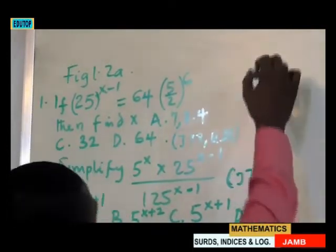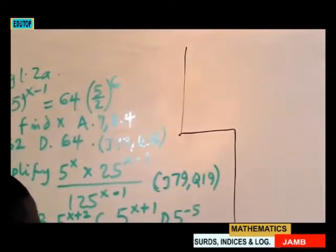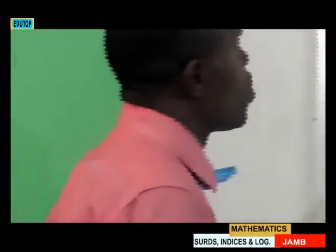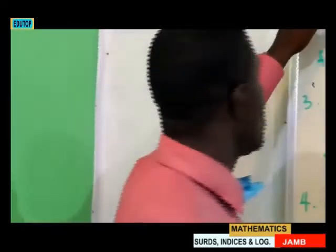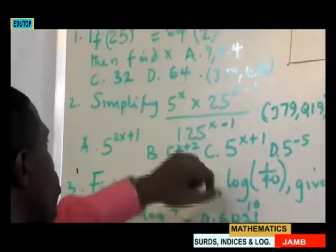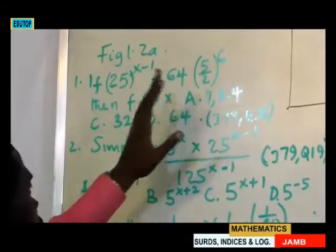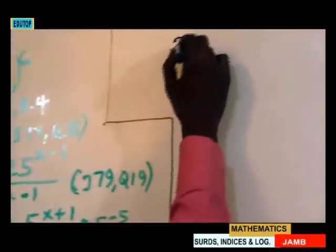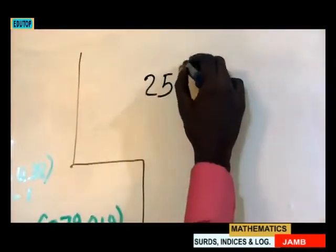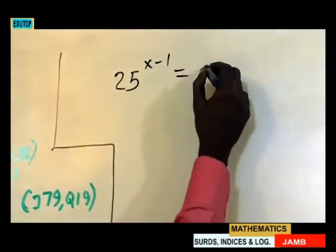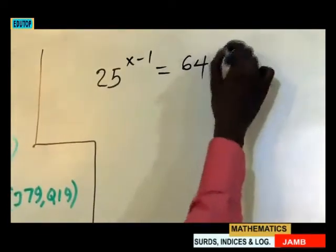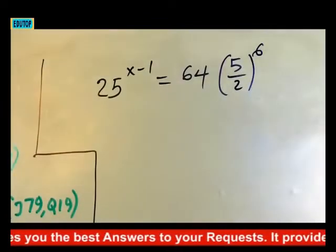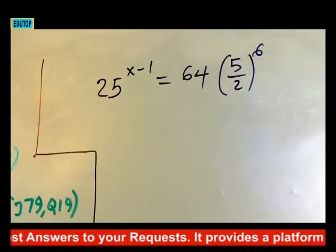The first question says: if 25 raised to the power (x − 1) equals 64 multiplied by (5/2) raised to the power 6, find x. So we are given 25 raised to the power (x − 1) equals 64 times (5/2) raised to the power 6. This is our first question and we are solving for x.